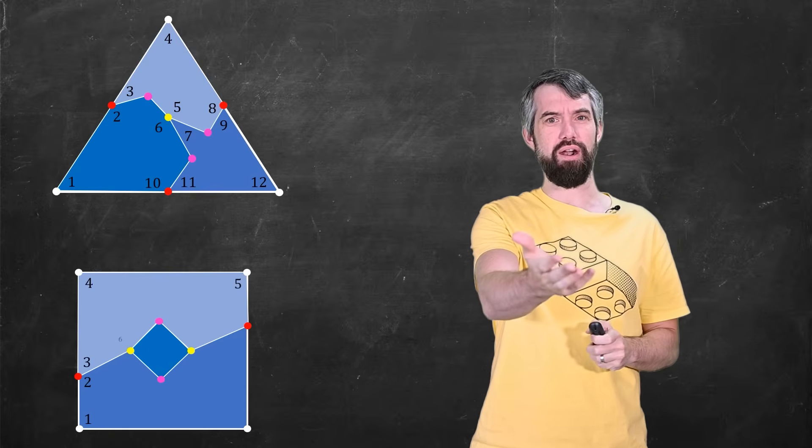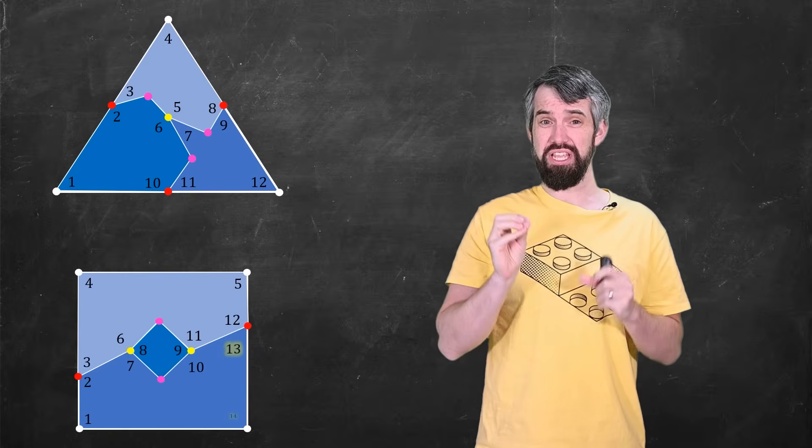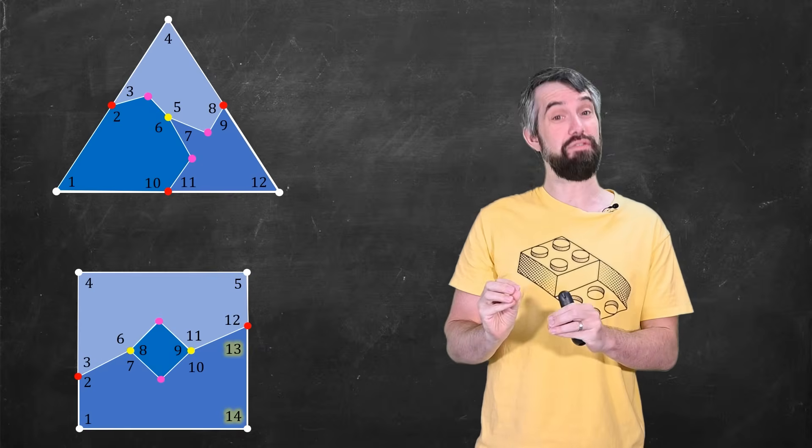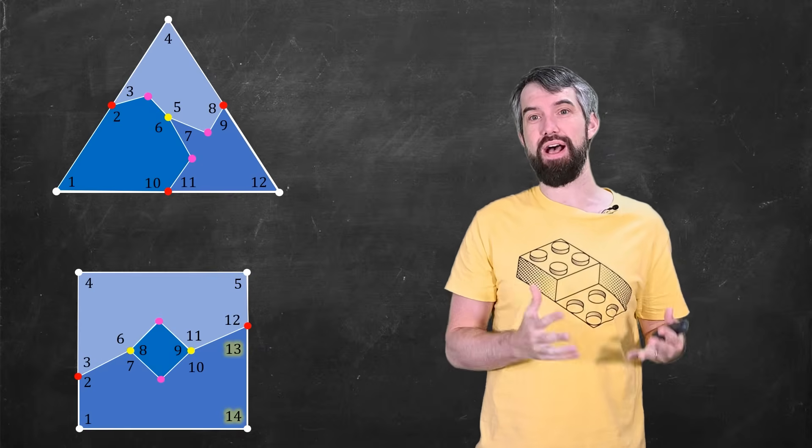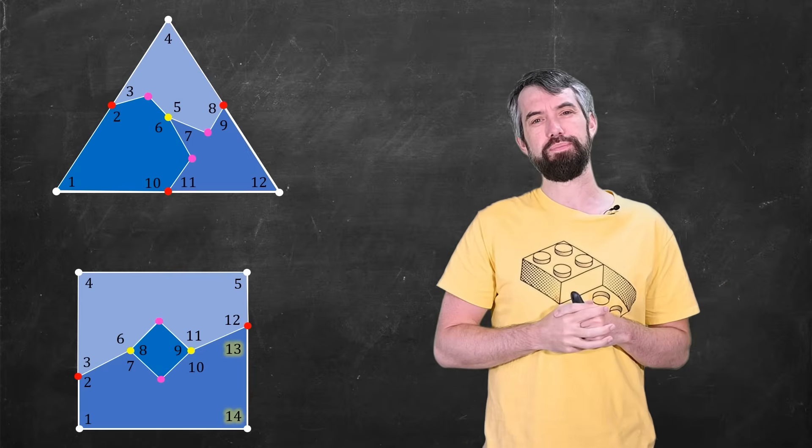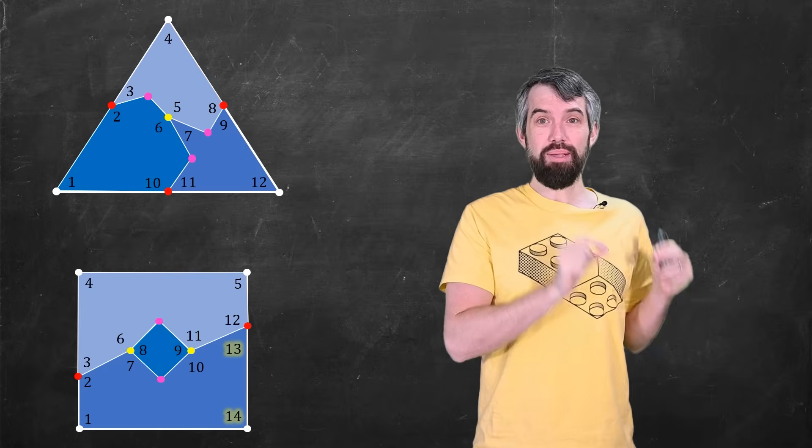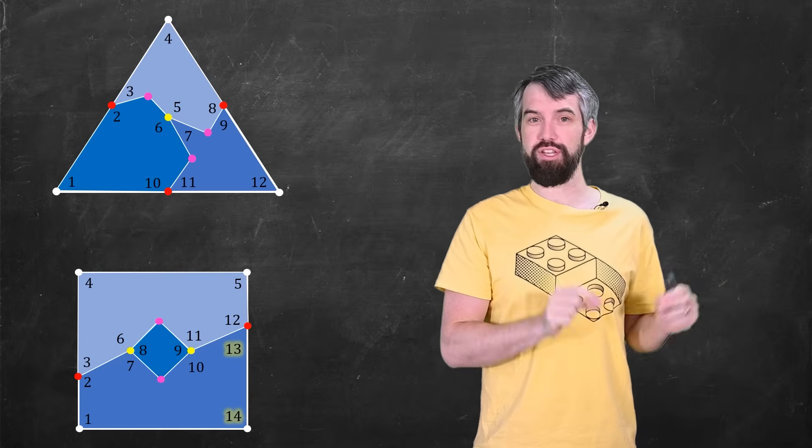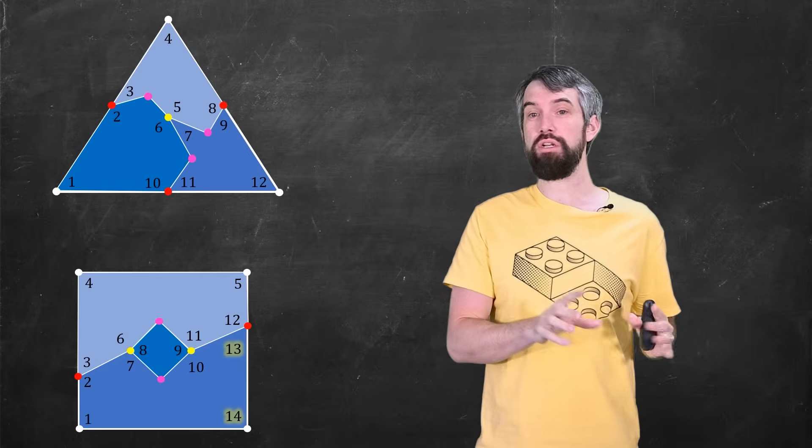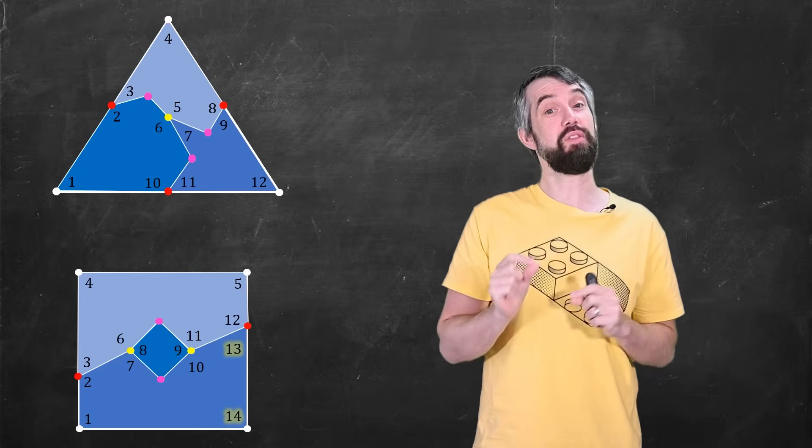But if I count them up for the square, you'll notice that there's actually 14 such of these angles which are less than the value of pi and don't come from the pink dots. And that is enough to eliminate the possibility that the triangle with this configuration could go to the square with this configuration.